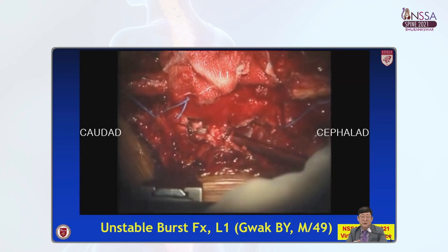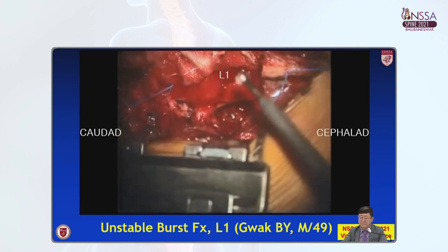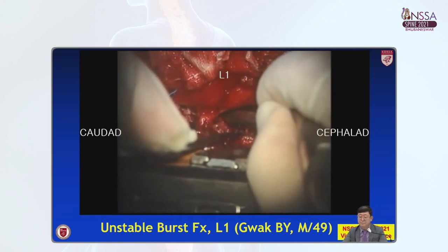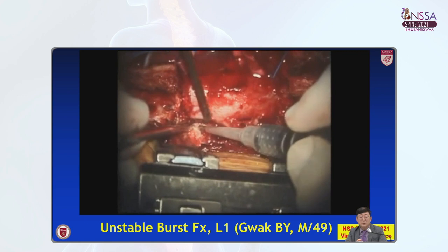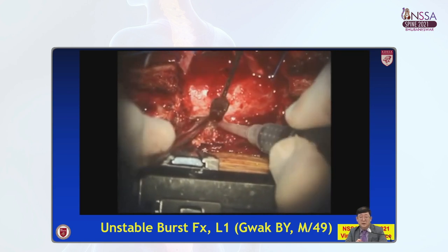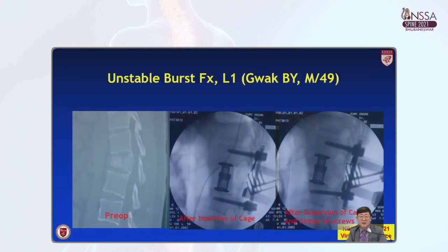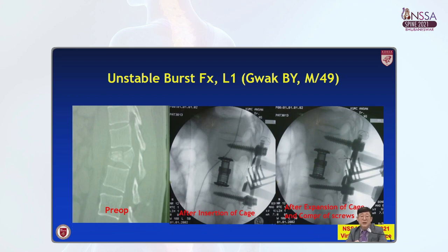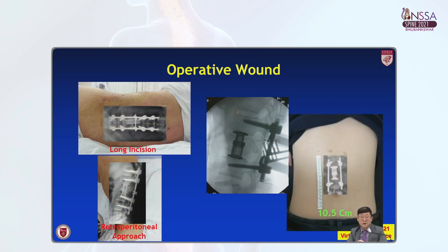This is a short video clip for the unstable burst fracture vertebral body reconstruction. I'm using ultrasonic osteotomy and high-speed drills. This is immediately after inserting the cage, expansion of the cage, and compression of the upper and lower screws. By this method, I can reconstruct the vertebral body with a smaller incision than lateral approaches.